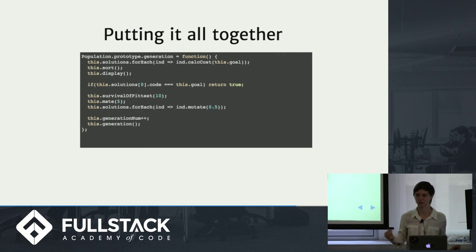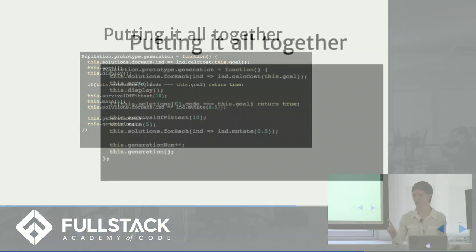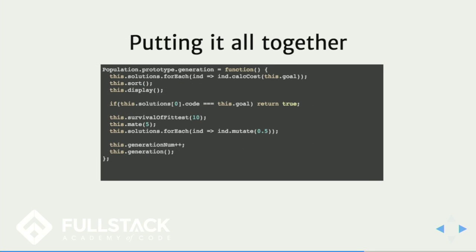So that's one generation. We go through, calculate the costs or fitness of each solution, then sort them. Then we check: is the best one hello world? If so, you're done. Otherwise, kill off some, create more by mating, and then go through some mutation steps.